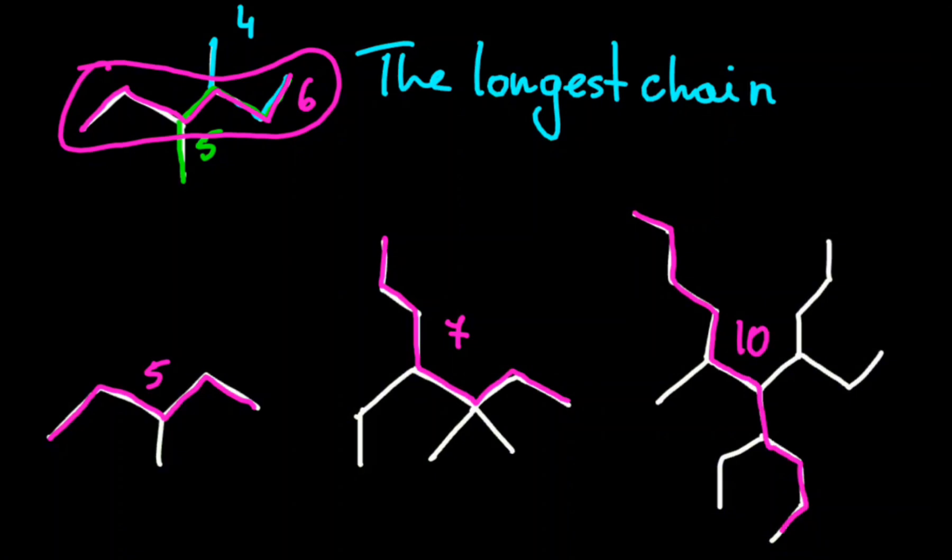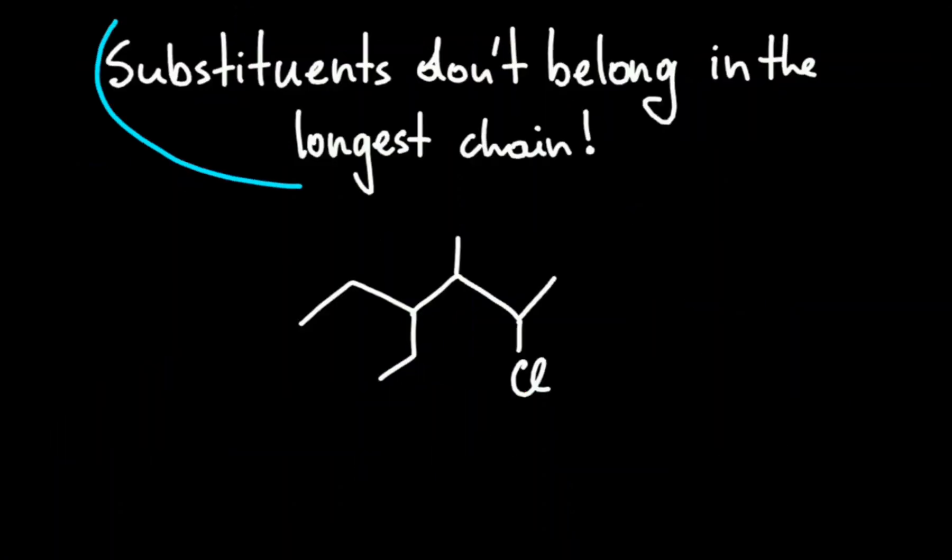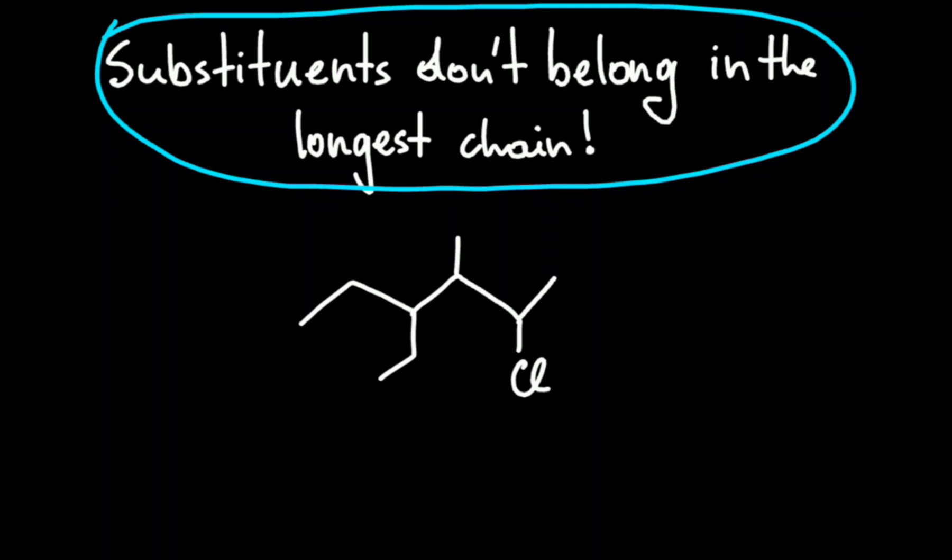Now let's talk about substituents. In simple terms they are an atom or a group of atoms which don't belong in the longest chain. So if the longest chain is six carbons, the substituents are here, here and here.